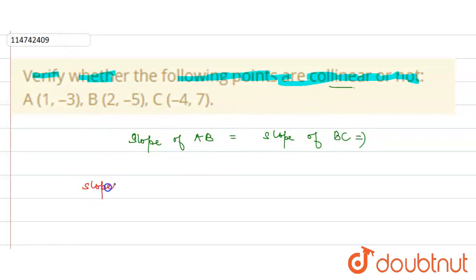Slope of AB - what is the formula of slope of a line? For points AB, the formula is Y2 minus Y1 upon X2 minus X1.